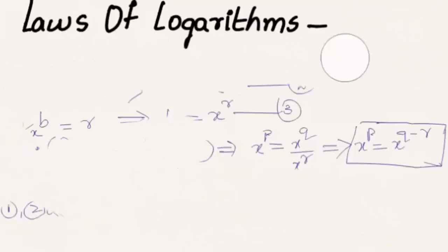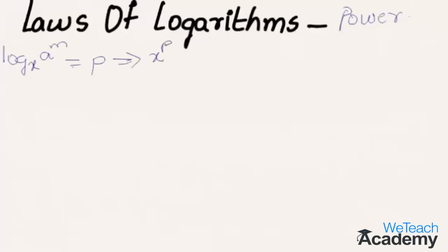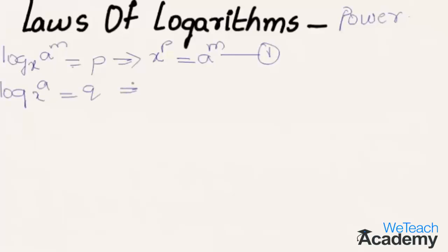Now let us discuss the logarithm of a power. Let us consider log a to the power m to the base x equal to p. This can be written in exponential form as x to the power p equals a raised to the power m — equation 1. Now let us consider log a to the base x equal to q, which implies a equals x to the power q — equation 2.